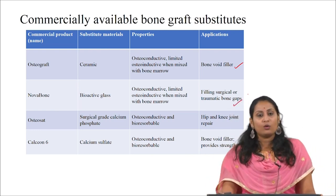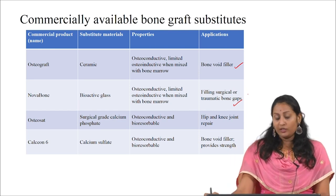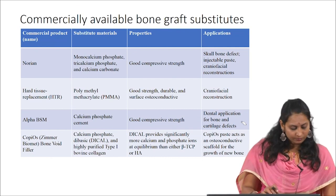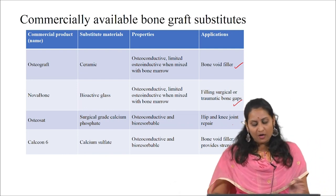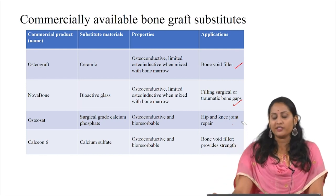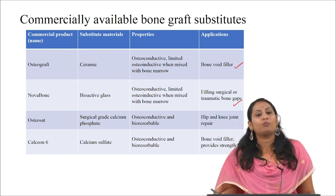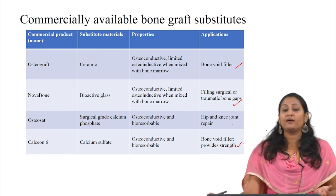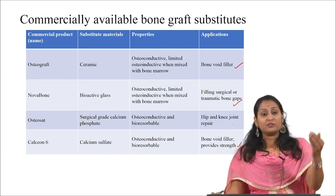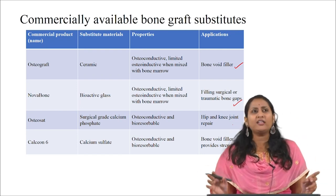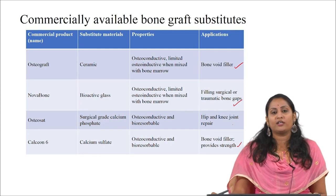Osteostat is a surgical-grade calcium phosphate that is osteoconductive and bioresorbable, used for hip and knee joint repair. Callos is made of calcium sulfate — osteoconductive and bioresorbable — used as a bone void filler and to provide strength. These are all ceramic and ceramic-derived composites used as bone graft substitutes, consistent with the role of osteoinductive ceramics discussed in previous sessions.